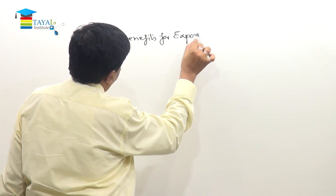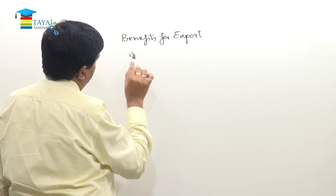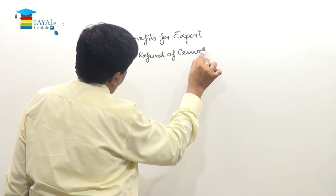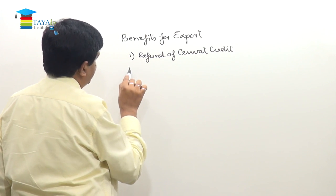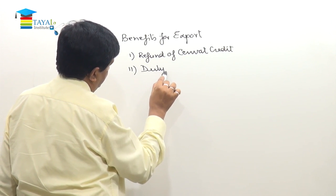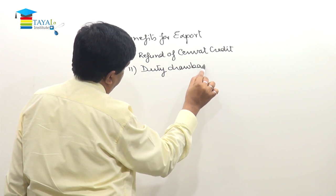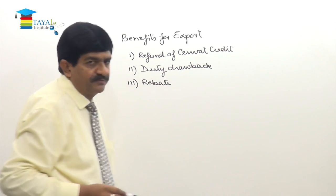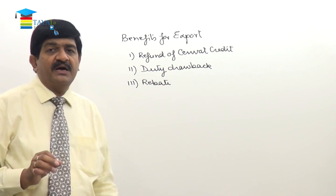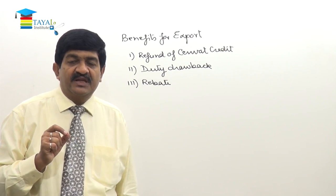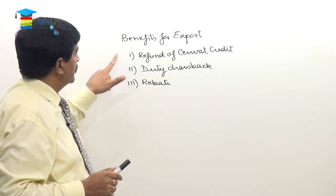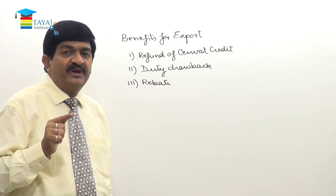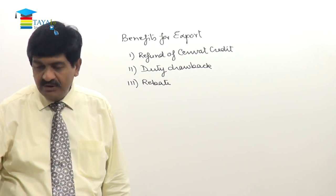For export: first benefit is refund of CENVAT credit, second benefit is duty drawback, third benefit is rebate. But all three benefits are not available at the same time — the exporter can choose any one. All three things are almost comparable, so it is the exporter who has to decide which benefit he will take.